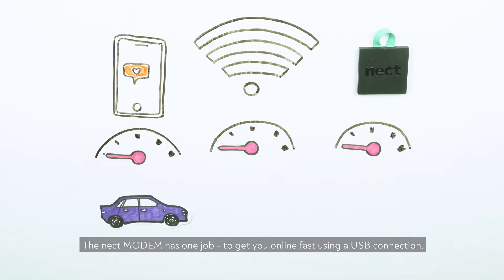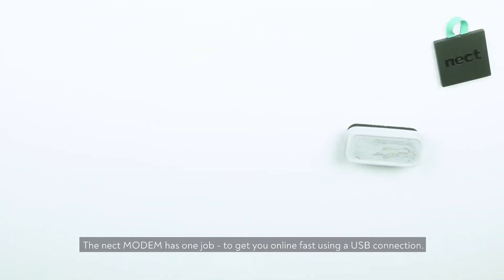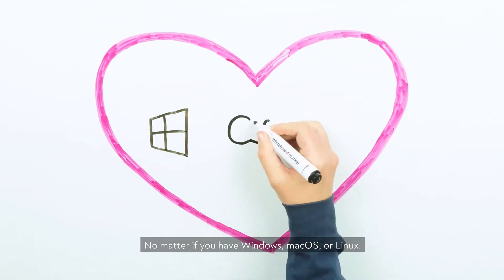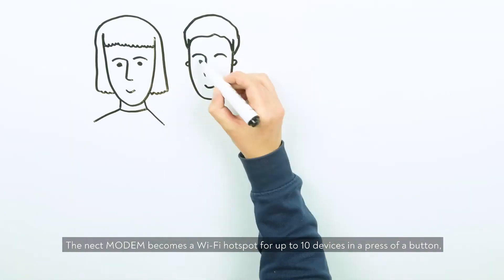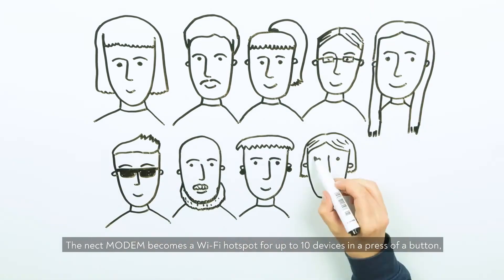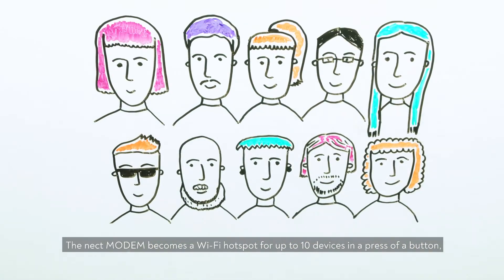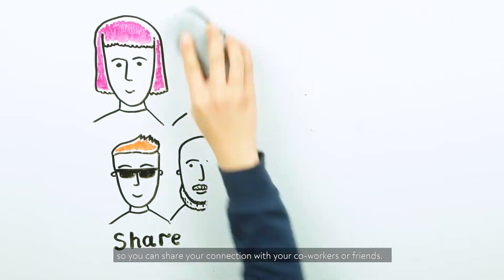The Neckt Modem has one job: to get you online fast using a USB connection, no matter if you have Windows, Mac OS, or Linux. The Neckt Modem becomes a Wi-Fi hotspot for up to 10 devices in a press of a button, so you can share your connection with your co-workers or friends.